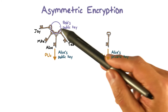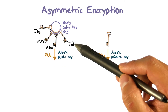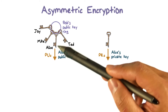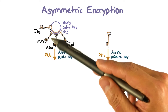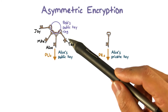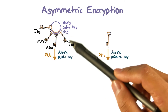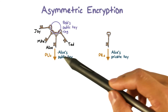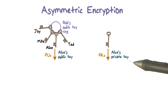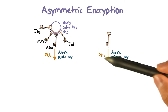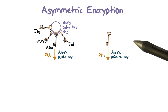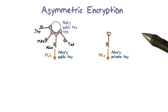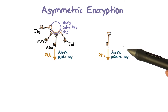The public key can be published — for example, on a user's website or on a public repository — so that everybody knows your public key. But the companion private key has to be kept as a secret; that is, only the user should know his or her own private key.